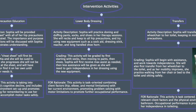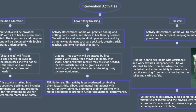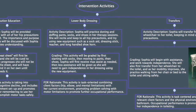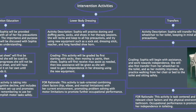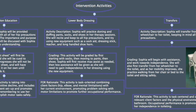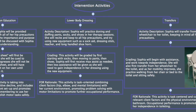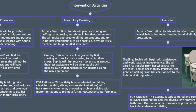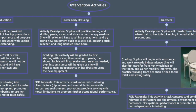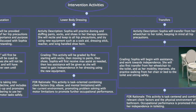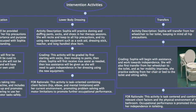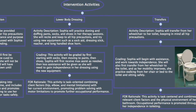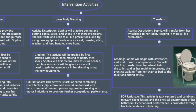Lower body dressing will include practicing donning and doffing socks, shoes, and pants using hip kit equipment. The activity will be graded by starting with socks and moving to pants and shoes as Sophia improves. Maximum assistance will first be given by the therapist, and this assistance will be weaned through the process. This activity is task-oriented, combining client factors with her current environment, and promotes problem solving with her motor limitation to improve occupational performance.